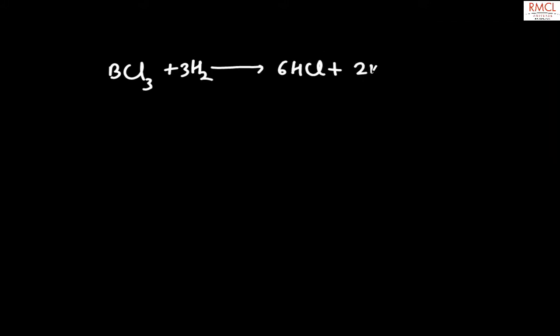This is from the reduction of boron trichloride by hydrogen. So in this question, boron trichloride is reduced by hydrogen and converts into 6 HCl and elemental boron, then multiply by 2.